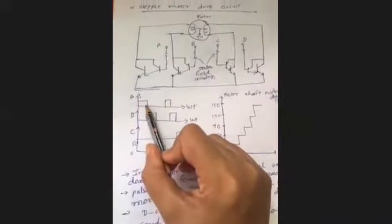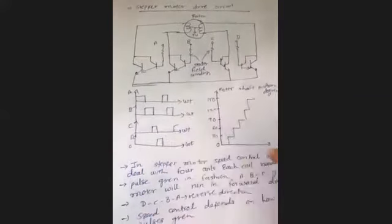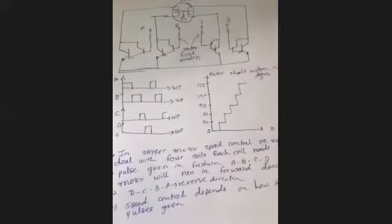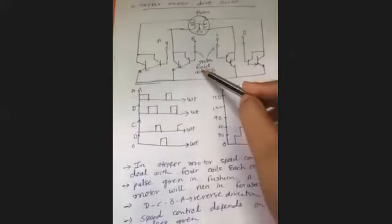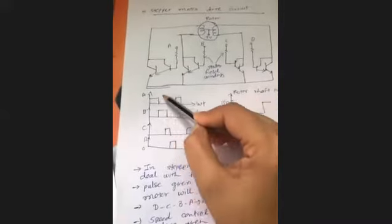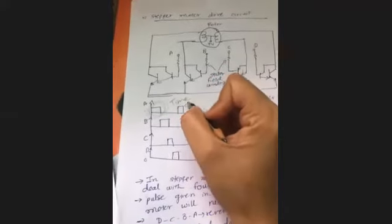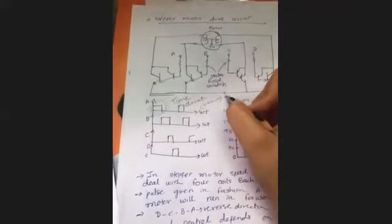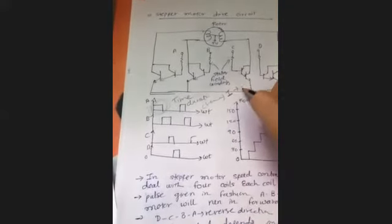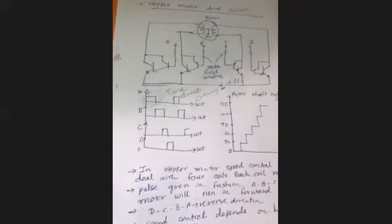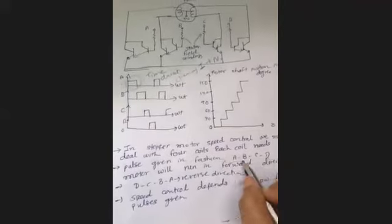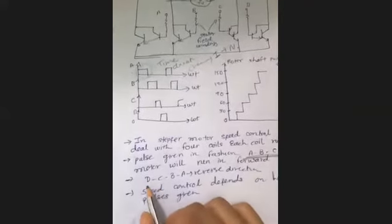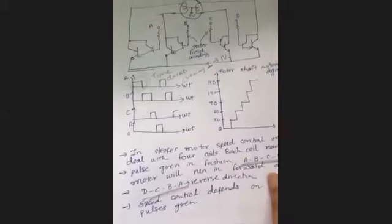First, pulse A is applied; when A is complete, pulse B is applied, then C, then D, one by one. Each pulse energizes the stator winding in sequence, and the rotor steps accordingly. By changing the timing duration of the pulses, the current changes, and the speed changes. We can control the speed and direction this way.